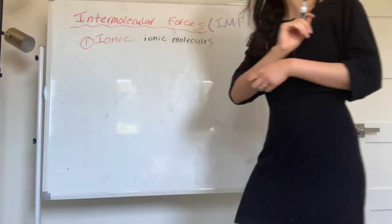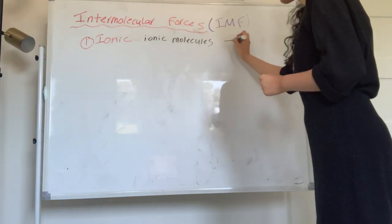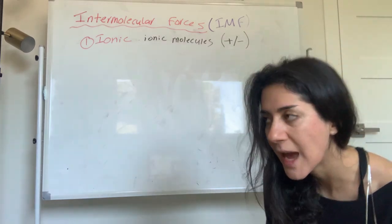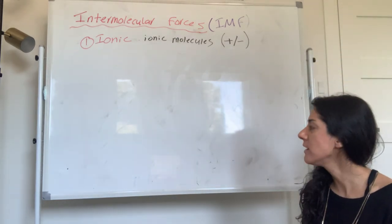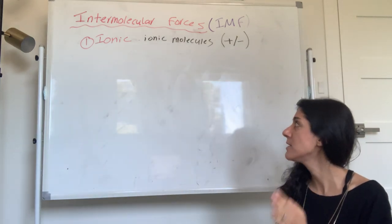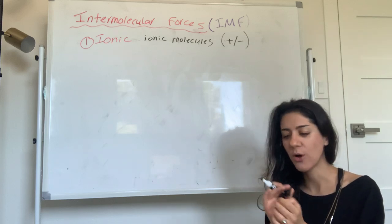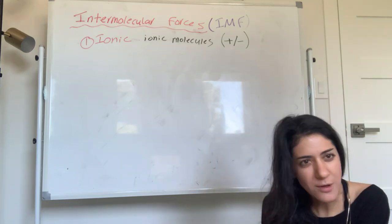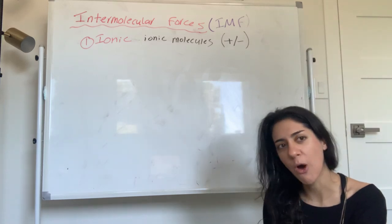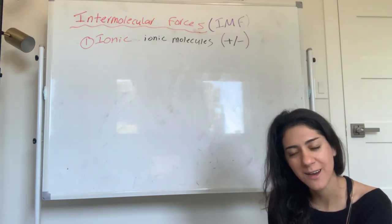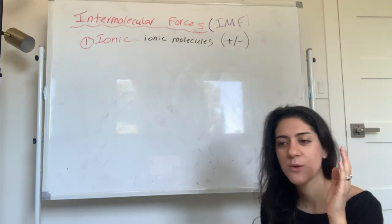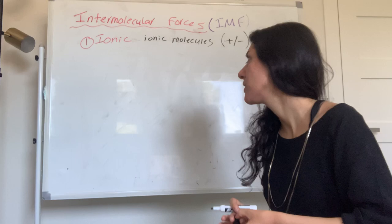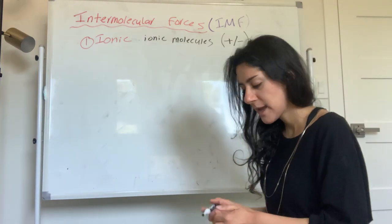Ionic molecules have an attraction of charged atoms — plus and minus charges. So every time you have an ionic compound, what's going to hold everything together is ionic IMF. How do you know you have an ionic compound? You know you have an ionic compound when you have a metal and a non-metal together.